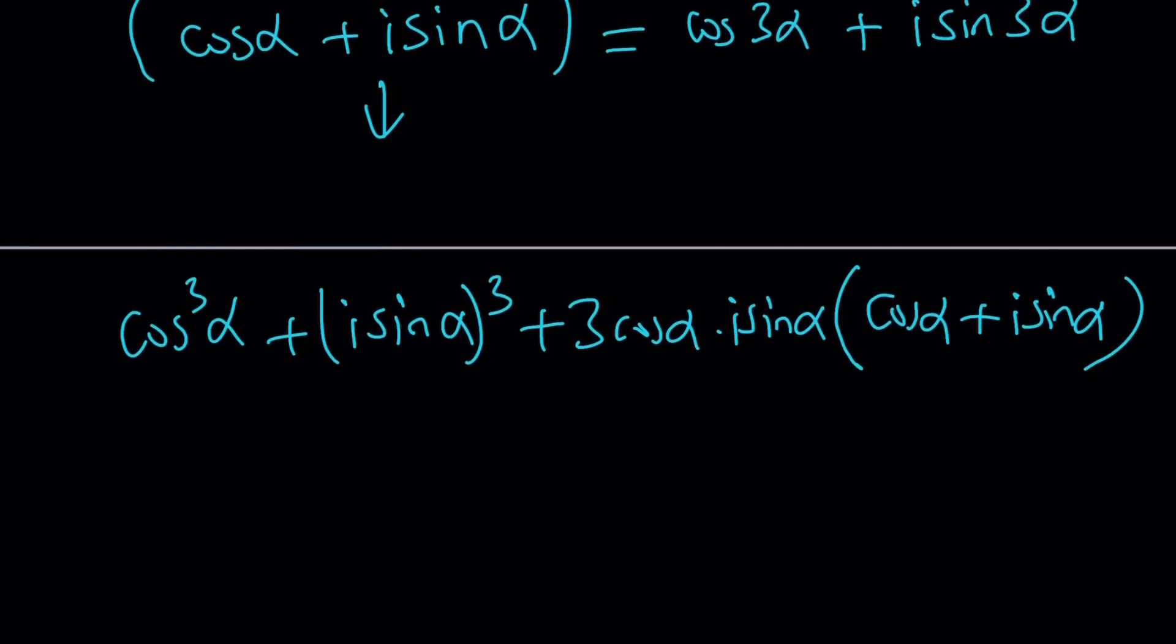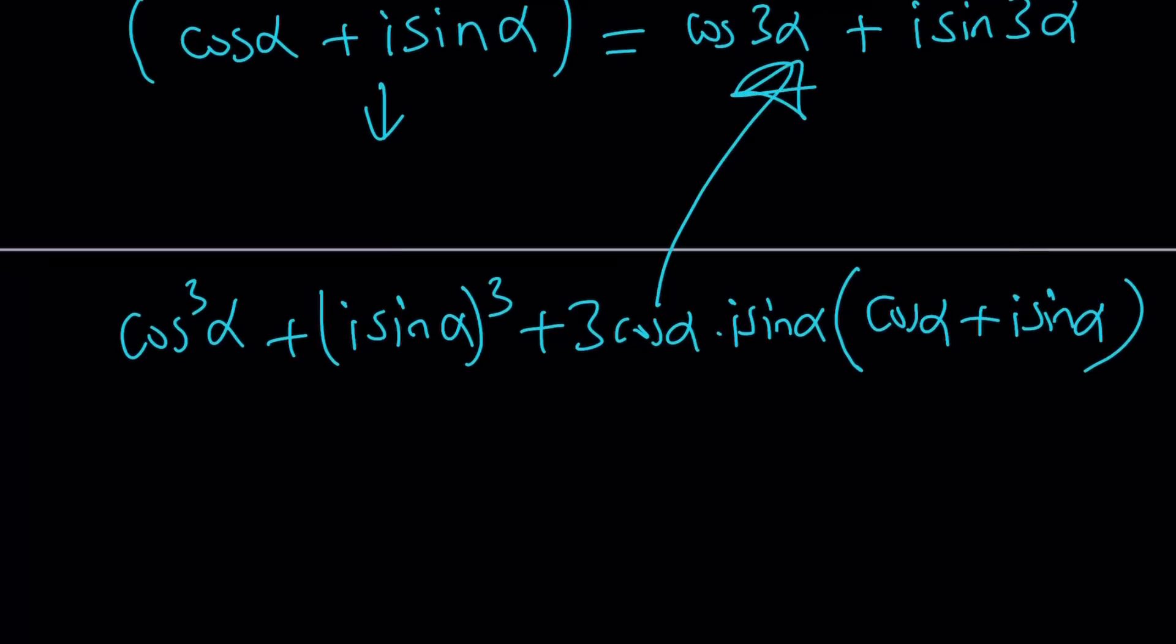And then you're going to set it equal to this and the real and imaginary parts are going to make up this and that. And guess what? To find tangent 3 alpha all you have to do is divide sine 3 alpha by cosine 3 alpha and you'll get the answer.